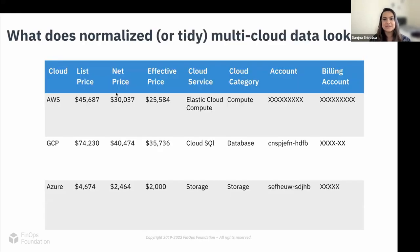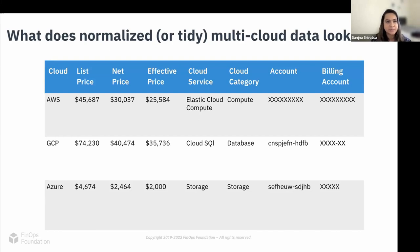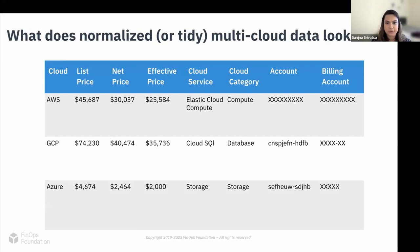This is what a normalized or tidy data set for multi-cloud billing would look like. You can already see it's cleaner. You can define what list price, net price, and effective price mean for you. List price is public pricing with absolutely no discounts. Net price involves some layer of discounts — applicable EDP, tiered discounts, or credits. Effective price would be the price after your RIs or savings plans, distributed across all of your accounts.